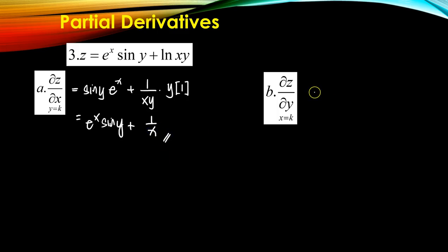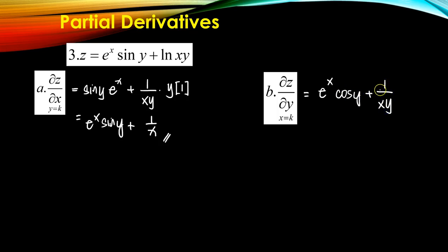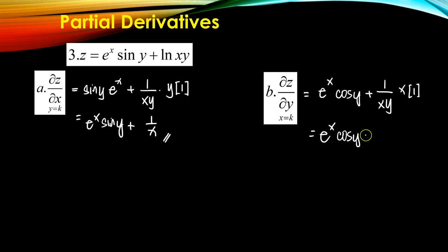For the partial of z with respect to y, x is the constant now. So e^x can be moved out. The derivative of sin(y) is cos(y). For the ln(xy) term, the derivative is 1 over xy, and since x is constant, we move x out, and the derivative of y with respect to y is 1. So the answer is e^x · cos(y) + 1/y.